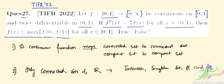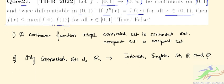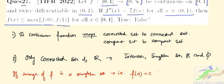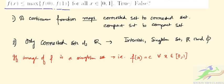Now if the image of f is a singleton set, that is if f(x) = c for all x ∈ [0,1], then f''(x) = 0.